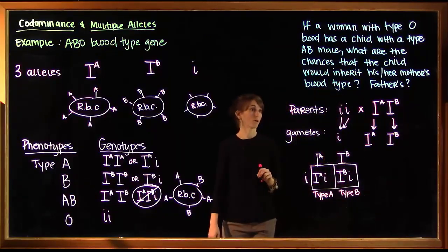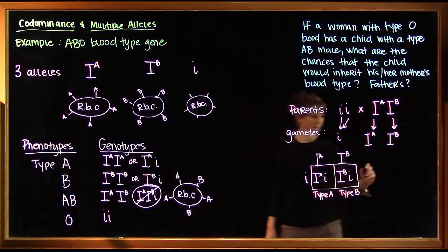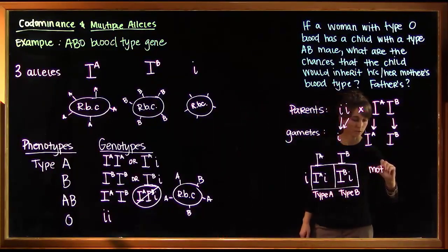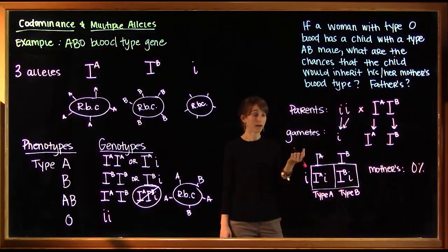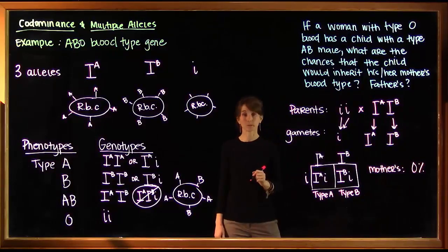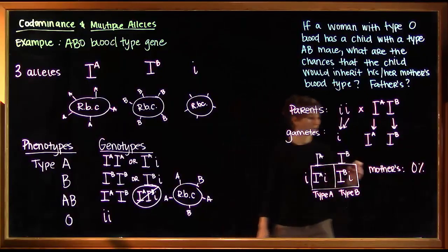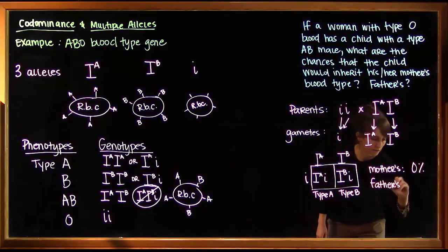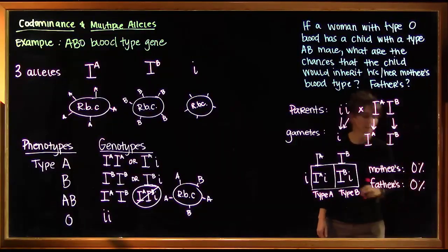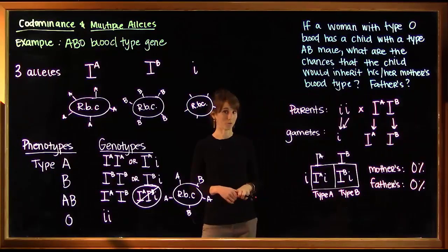The mother's blood type was type O, so there is zero chance that any child would inherit its mother's blood type. And the father in this scenario had type AB blood. Neither of these potential offspring have type AB blood. So same thing with the fathers. There is a zero percent chance that these offspring would match either their father or their mother's blood type.